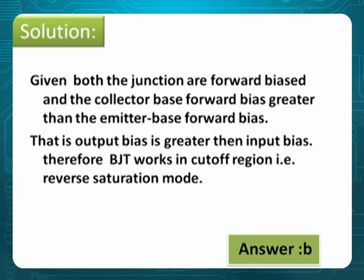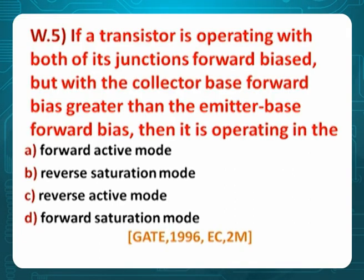Problem 5: If a transistor is operating with both junctions forward biased, but the collector-base junction forward bias is greater than the emitter-base junction, then it operates in? Both junctions are forward — so it is either saturation or reverse saturation. Forward saturation means output voltage is near zero, but here output is greater. When both are forward but the output bias is greater, it is acting as reverse saturation. Option is B.